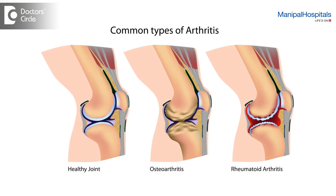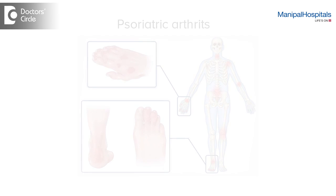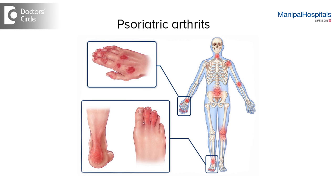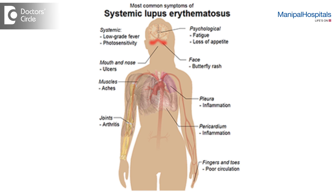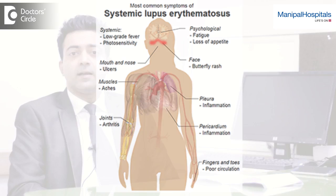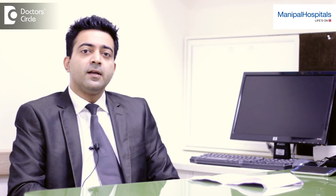Other types of arthritis are inflammatory arthritis — for example, rheumatoid arthritis, psoriatic arthritis, and systemic lupus erythematosus. All these conditions affect predominantly the middle-aged and young population.